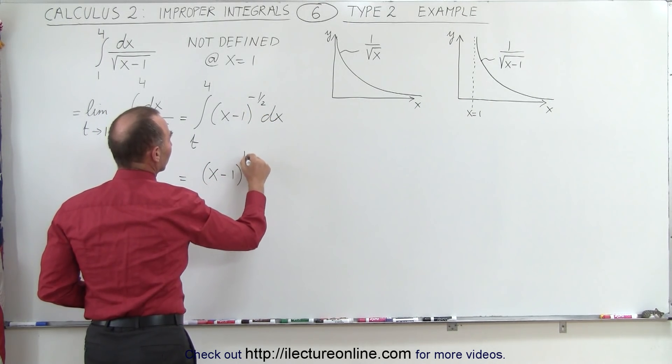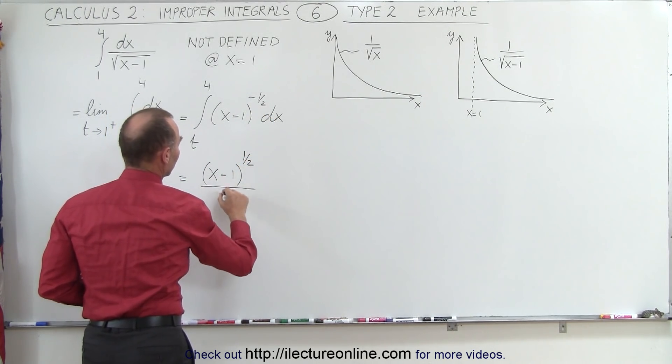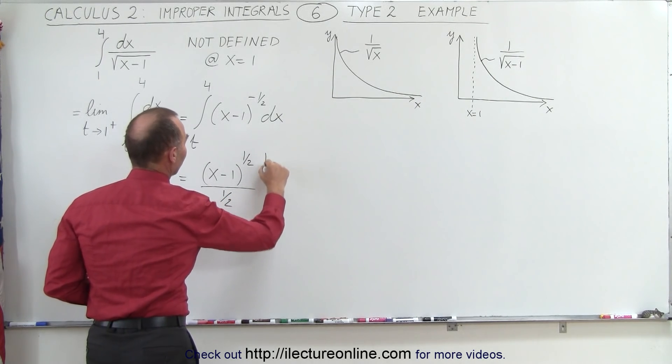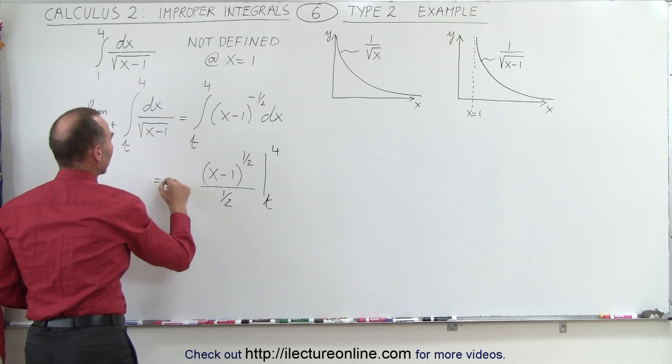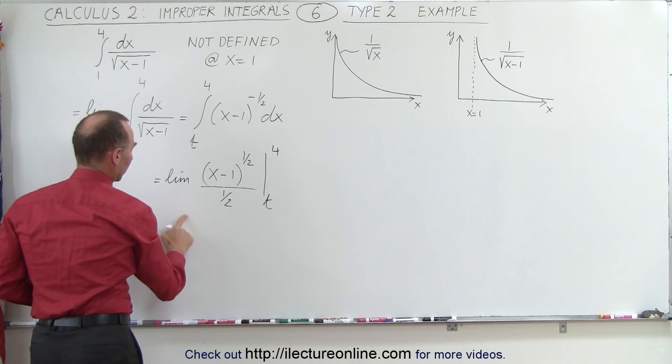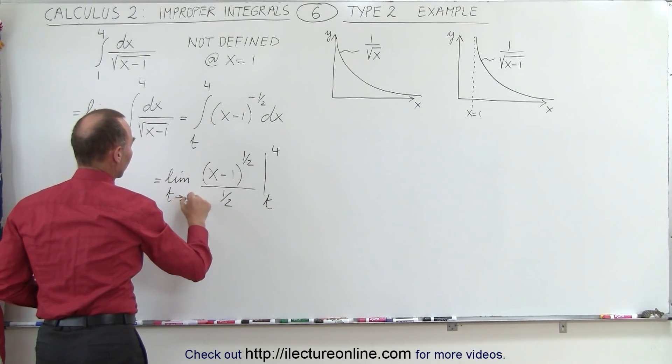divided by the new exponent, and evaluate it from t to 4, but of course we still need to put in the limit as t approaches 1 from above.